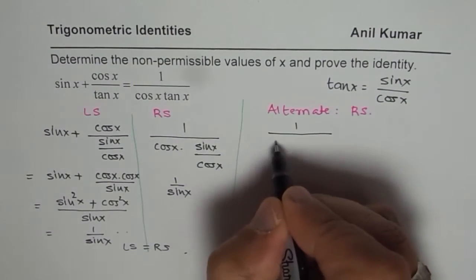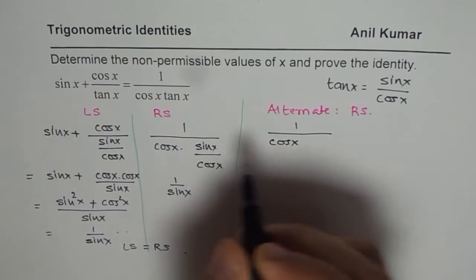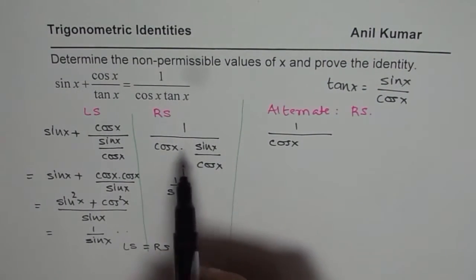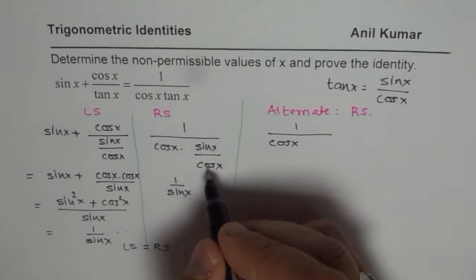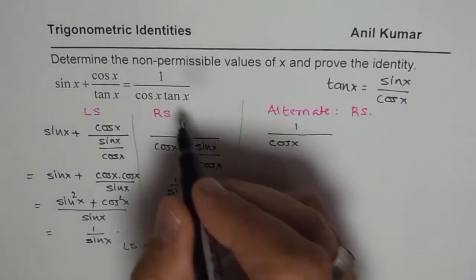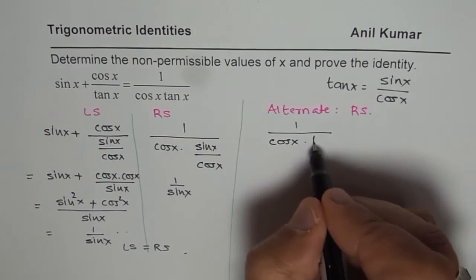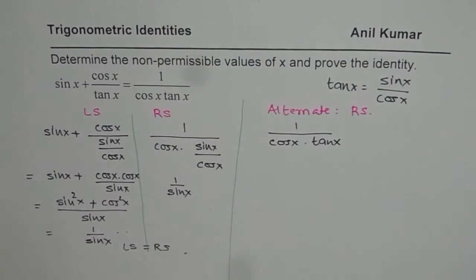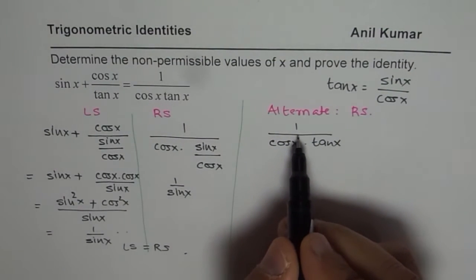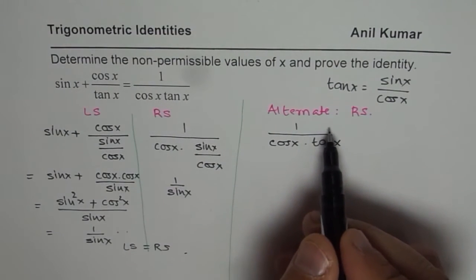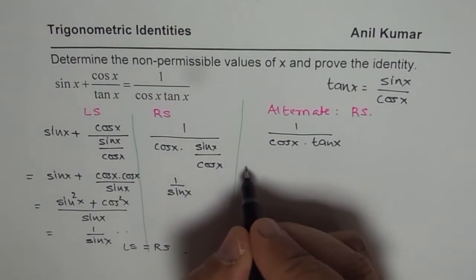So we have 1 over cos x, and as we did here, we wrote tan x as sin x over cos, or we can just keep tan x for the time being. Now, what we can do here is we can write 1 as sin square x plus cos square x.